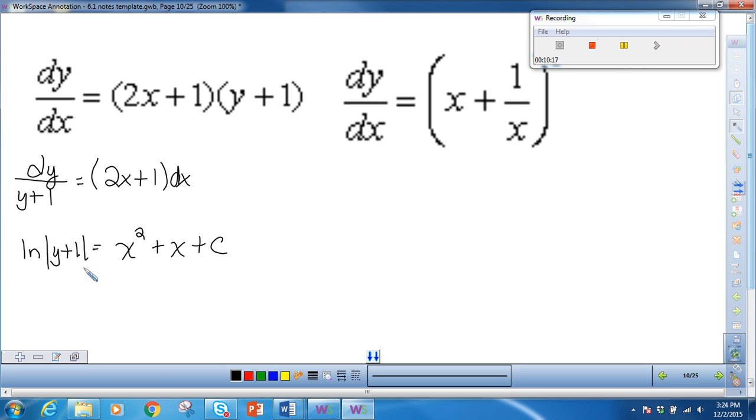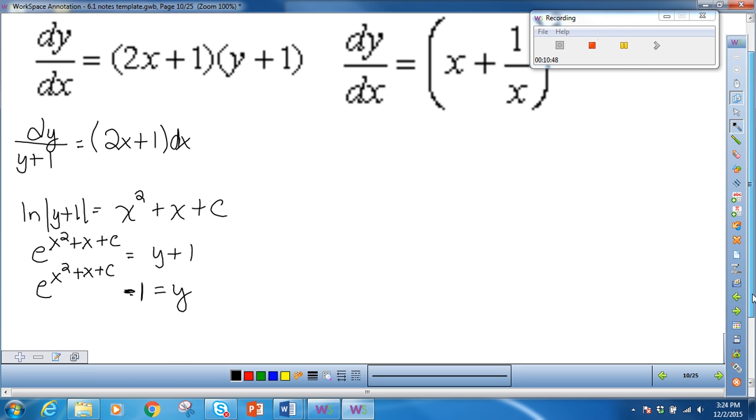We have to solve for y, so then we get e to the x squared plus x plus c is equal to y plus 1. Which gives us e to the x squared plus x plus c minus 1 is equal to y. Now, let me show you something that's going to be important in the next unit that we do. You are aware, using properties of exponents, that I can write this as e to the x squared times e to the x times e to the c.